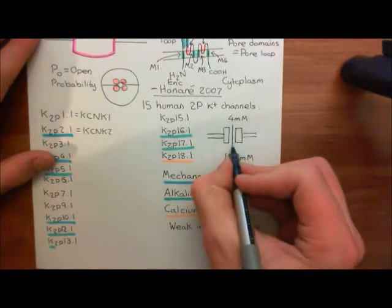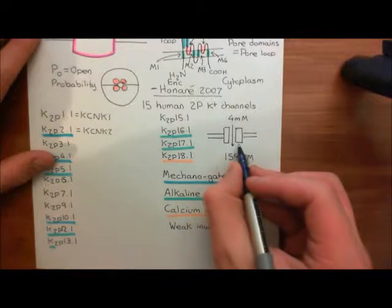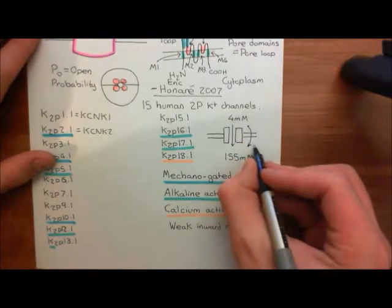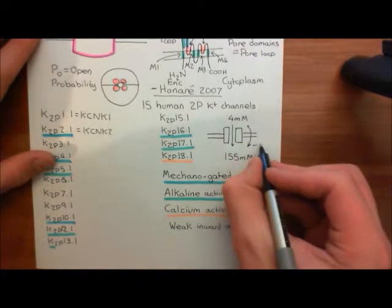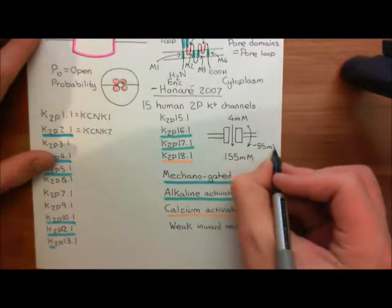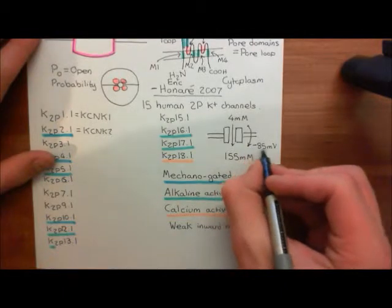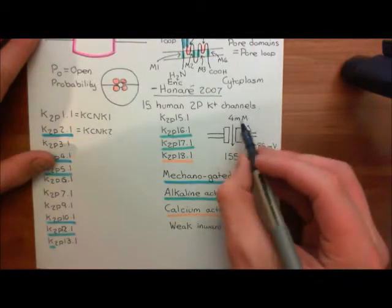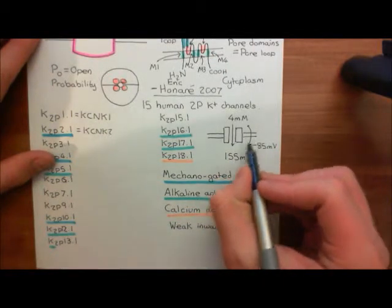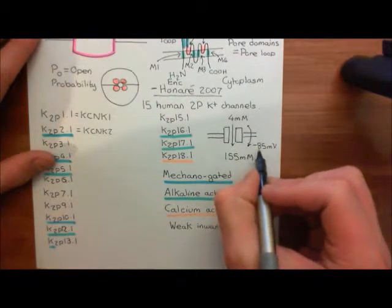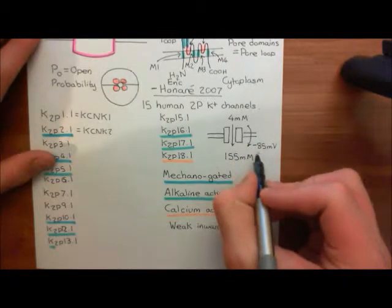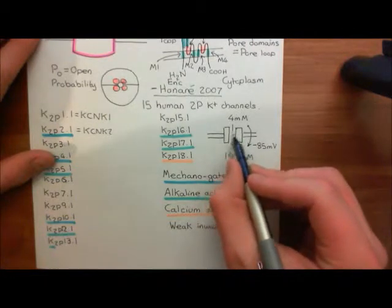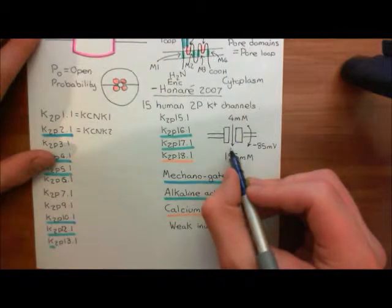When would potassium be moving into the cell? It's only if the electrical potential difference across the cell membrane was beyond the Nernst potential for potassium. The Nernst potential for potassium was negative 85 millivolts - that was the point at which you got no net movement of potassium across the cell membrane. If you went to negative 95 millivolts, you'd get a net movement in, and these channels are more likely to be open and will conduct potassium ions into the cell.